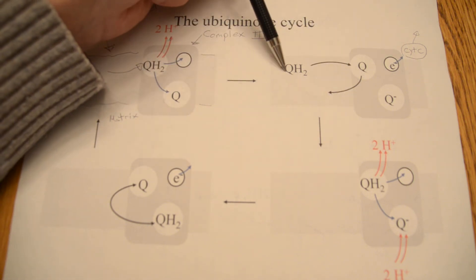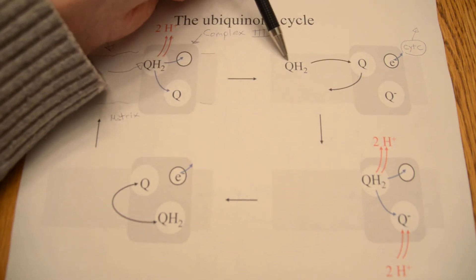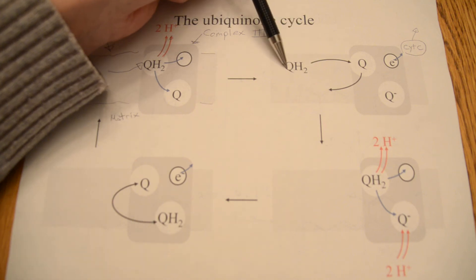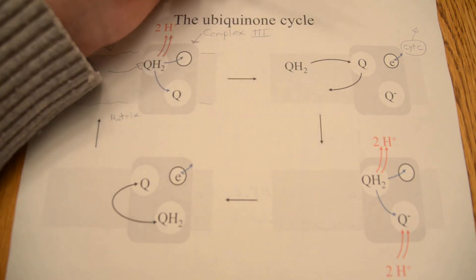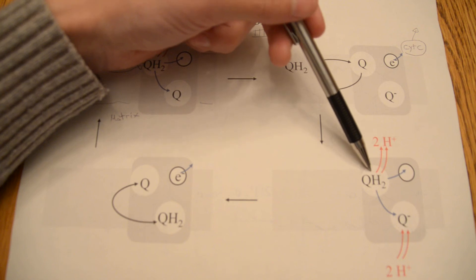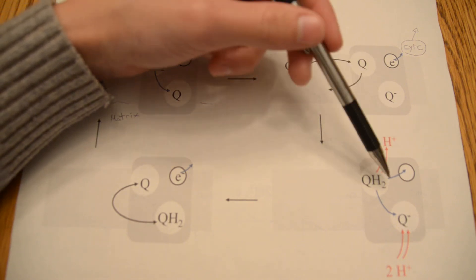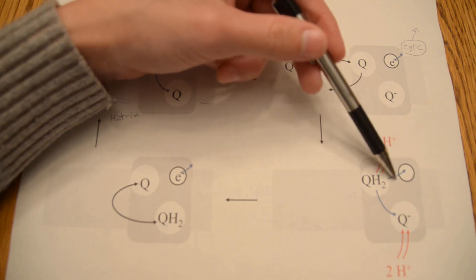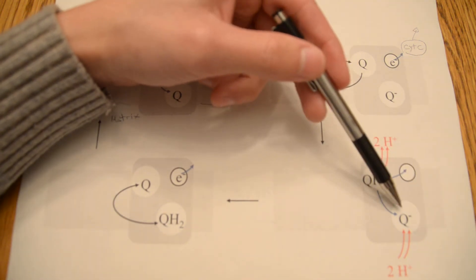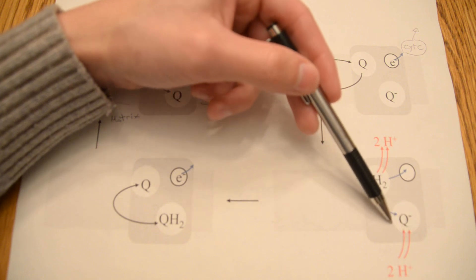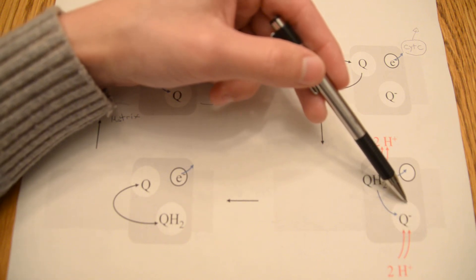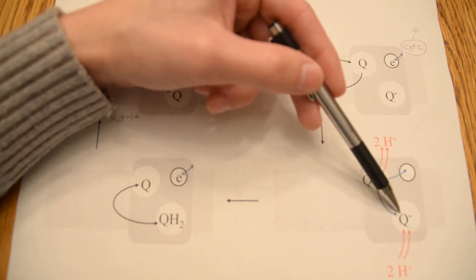So then, once we have this second ubiquinone, this second reduced ubiquinone here, then it will do much the same thing as it did before. It will expel its two protons up into the cytosol, give one electron to the electron accepting group,